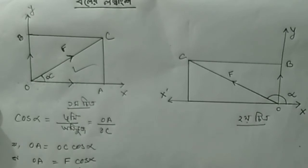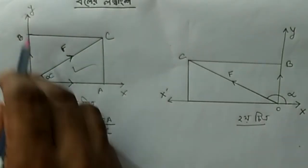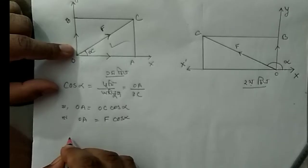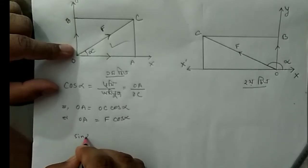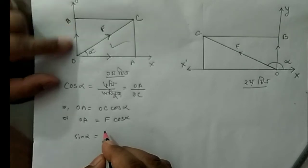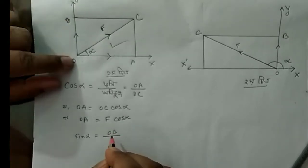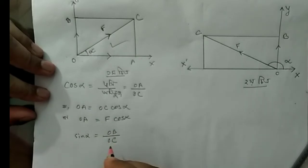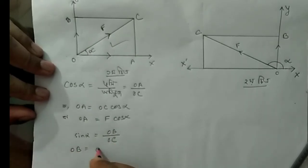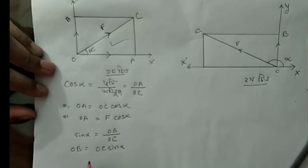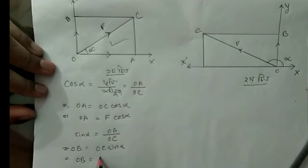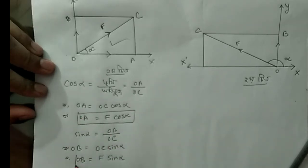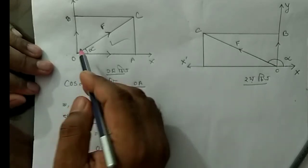Okay. In this case, we will count the B-bolt. OB is equal to sin alpha, sin alpha. And we have V equal to U, V equal to U, E sin alpha, 2Z F. So this gives us F sin alpha.